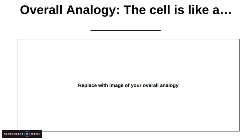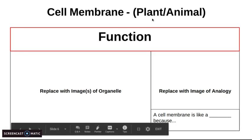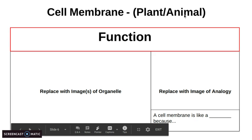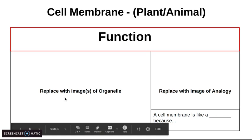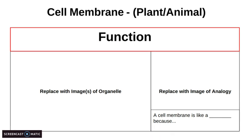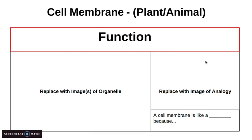So you are going to fill in your overall analogy, and then fill in each slide with your comparison. For example, the cell membrane is your first slide — tell me whether it's plant, animal, or both; tell me its function; give me a picture; and then come up with an analogy. The cell membrane is like blank — tell me what it's like, tell me why, and give me an image of that analogy. You are going to do this for each slide in this presentation, telling me how each organelle or part of the cell is similar to each part of whatever you choose to compare it to.